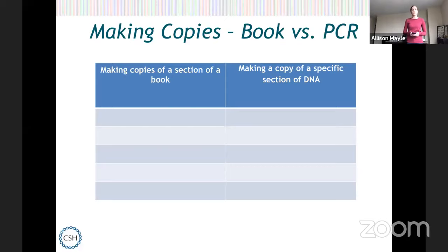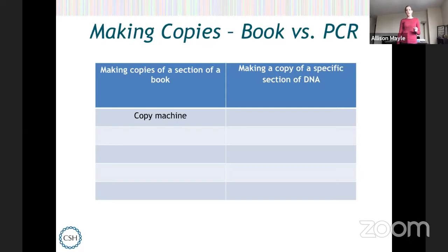One of the first things you would need to make copies of a section of a book is a copy machine. Sometimes my students will say they need a pen, but I want it to look exactly the same — writing by hand won't do that. So we would use a copy machine, a scanner and a computer, so that we could copy exactly what the book looks like. You also need paper and ink — the materials the book is made out of.